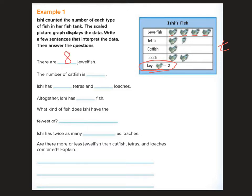Number of catfish is two. Ishi has blank tetras and blank loaches. Never heard of these. Here we have half a fish, which means if one fish is two, half of a fish would be one. So I have two and one to make three tetra. And 2, 4 loaches. Altogether, Ishi has blank fish. So we have 8, 2 and 4 makes 6, 6 and 3 makes 9, 8 and 9 makes 17 total fish.